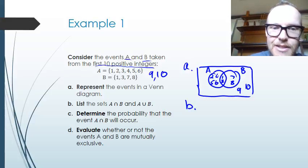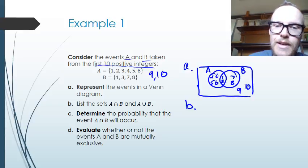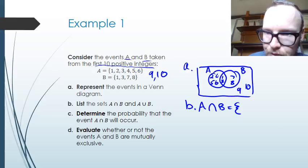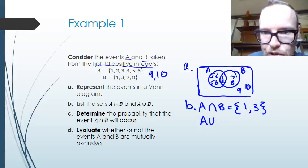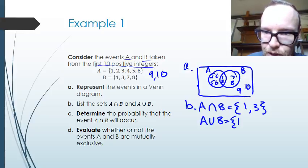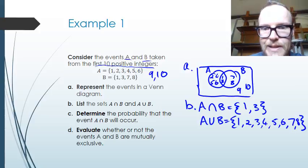For part B, we're asked to list the sets A union B and A intersection B. Looking at A intersection B first: these are the values common to both, which are 1 and 3. For the union of A and B, it's all the values that are in A or B or both, so 1, 2, 3, 4, 5, 6, 7, 8 are all in A or B or both.